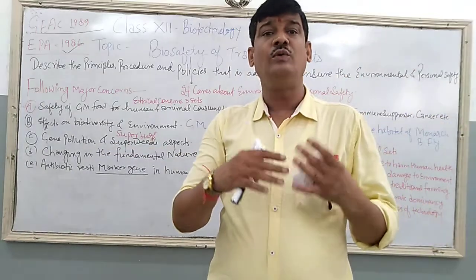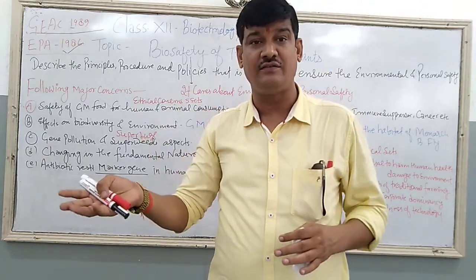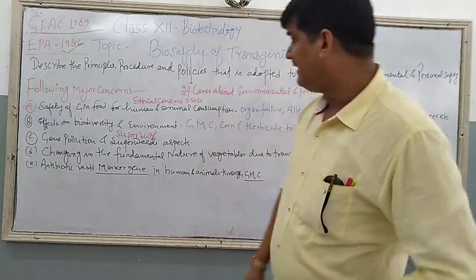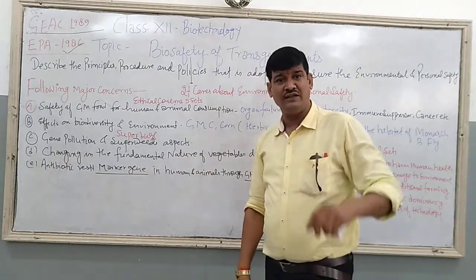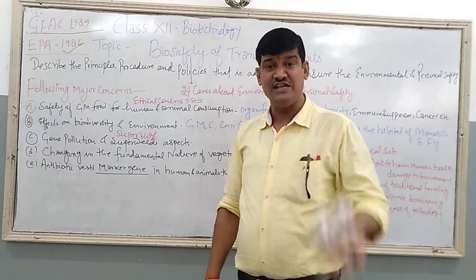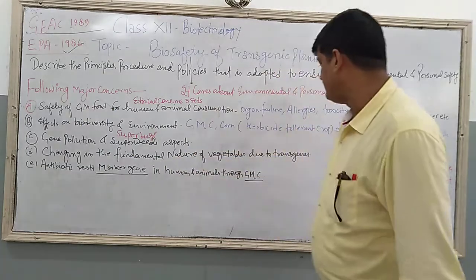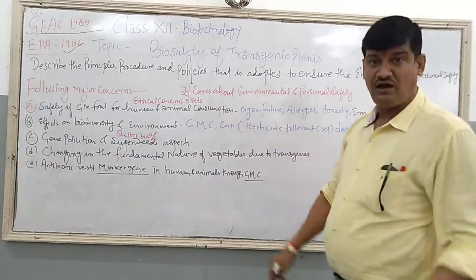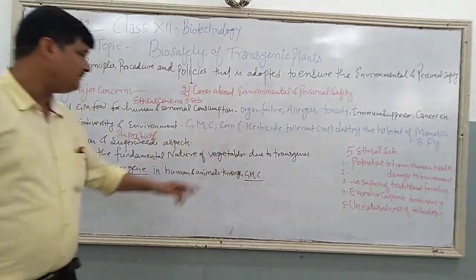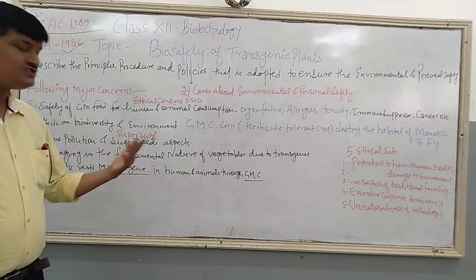These transgenes, whose main aim is to produce fruitful results, sometimes fail to achieve those results. Instead, the natural quality of vegetables, crops, or fruits may be changed. This is called the fundamental changing of the natural vegetables due to the transgene — after the entry of the transgene in the crop plants, the fundamental behavior or natural quality of the plants will be changed.